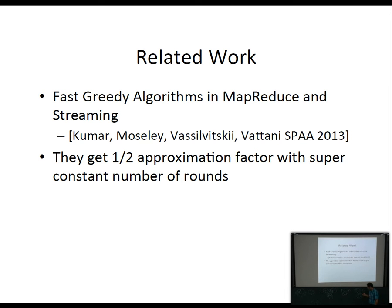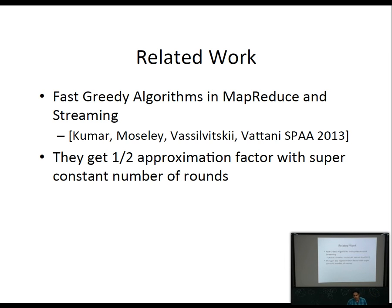The most related previous work is Kumara's streaming and MapReduce algorithm. In the best case, you can generalize that algorithm and get a one-half approximation, but you get more than a constant number of rounds. I care about constant rounds because these rounds give a very large overhead in practice — it adds significantly to the running time. Two rounds is very much preferable; a small constant is okay.